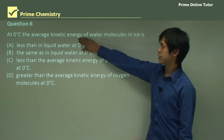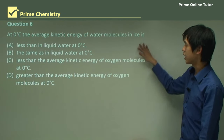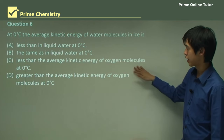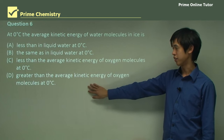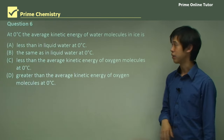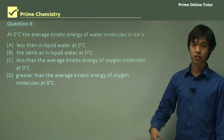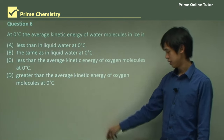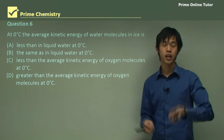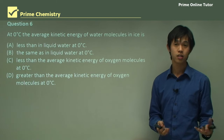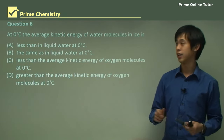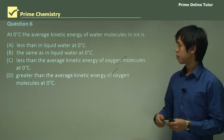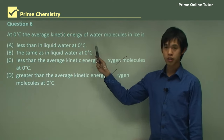Question: At zero degrees Celsius, the average kinetic energy of water molecules in ice is: less than liquid water, the same as liquid water, less than the average kinetic energy of oxygen molecules, or greater than the average kinetic energy of oxygen molecules? Well, water at zero degrees Celsius is frozen, so its kinetic energy will be very low. It's definitely not going to be on the same level as oxygen, because oxygen is a gas at zero degrees Celsius and moves much more rapidly than a water molecule.